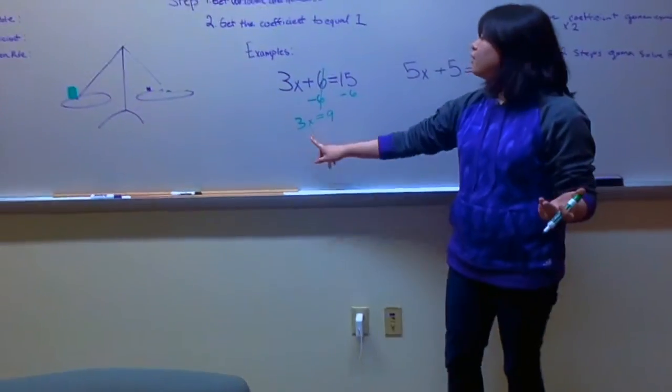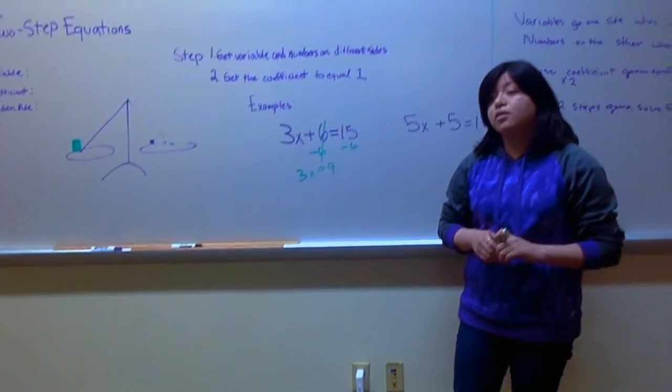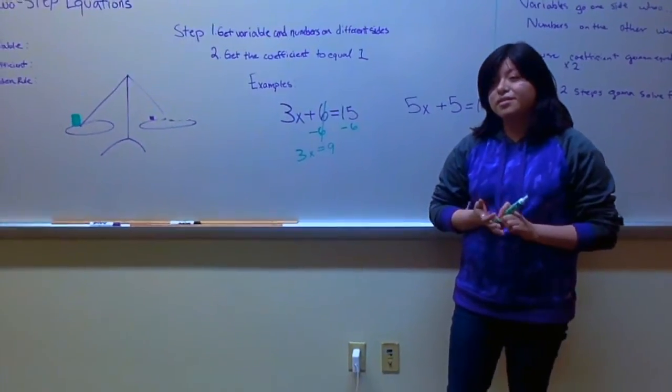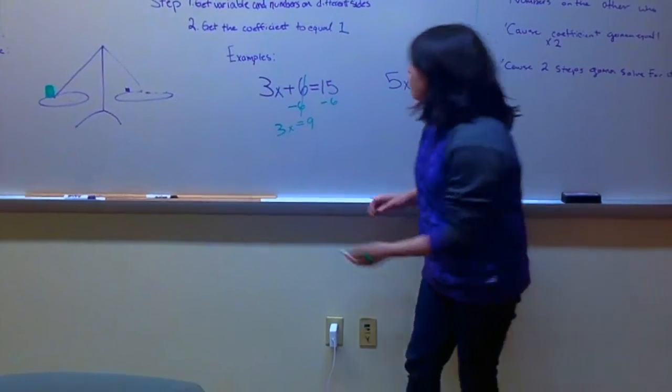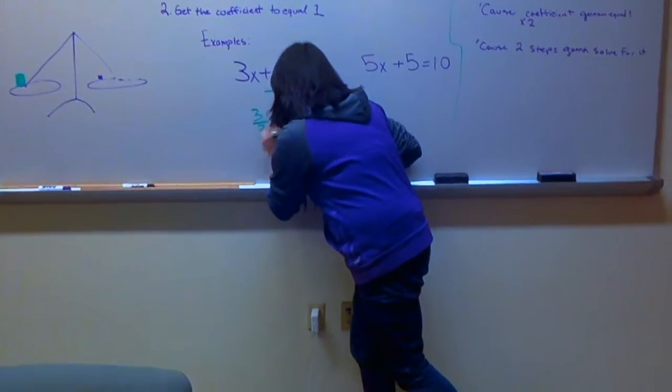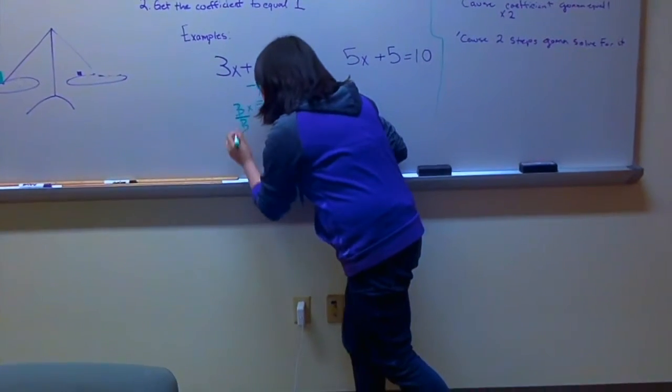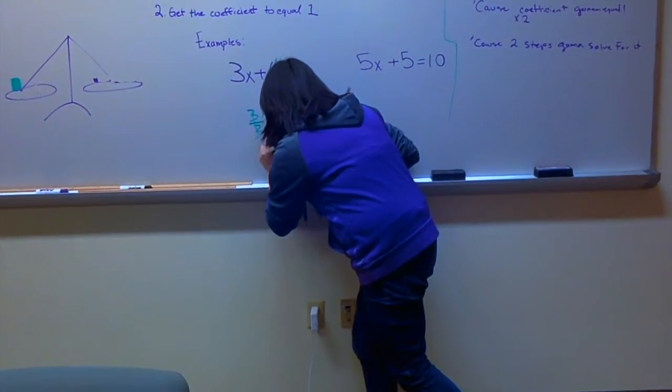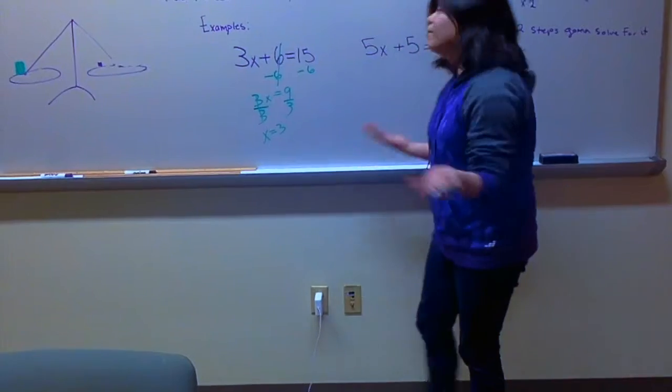So, then what do we do? We divide both sides by three. Correct? Three. Three. Three's cancel out. X equals three. Right. Okay.